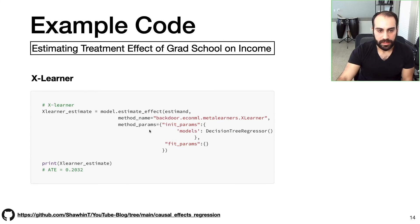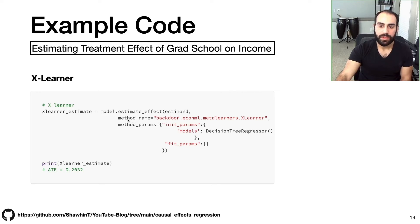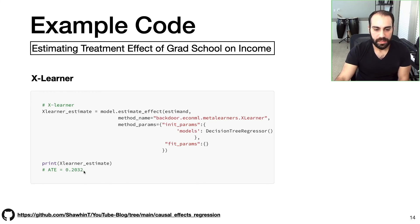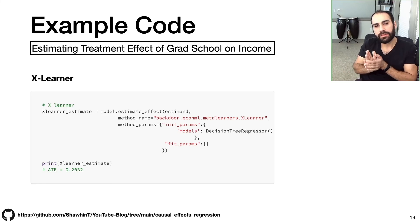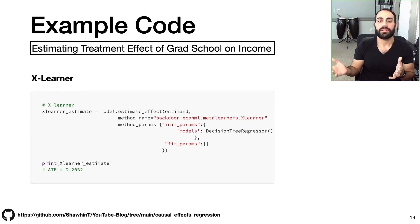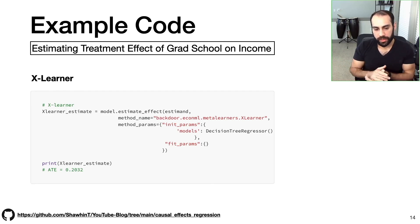Finally, we have the X learner — one of the meta learners. Same pattern: we put in our estimate, define the method name from EconML as X learner, and use a decision tree for the two sub-models. That outputs an average treatment effect of about 0.20. There's a bit of variation across methods, and I think that's one of the upsides of libraries like dowhy — we can very easily and programmatically try a suite of different causal effect estimates for our dataset, and have a wider distribution of causal effects to inform our analyses.